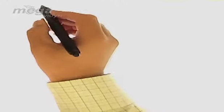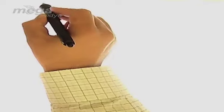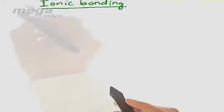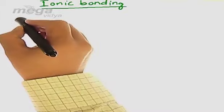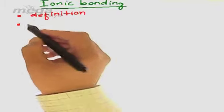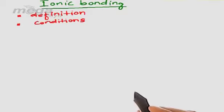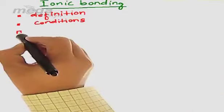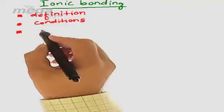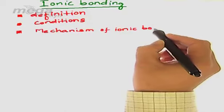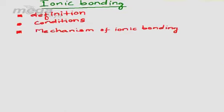Let us begin ionic bonding in this section. Before starting this chapter, let us know what topics have to be dealt with in ionic bonding. Firstly, we shall start with the definition, then we shall move to the conditions — meaning in what conditions there can be an ionic bond between two species. Then we shall observe the mechanism of ionic bonding, that is, what steps are involved during ionic bond formation.